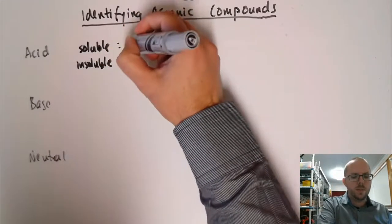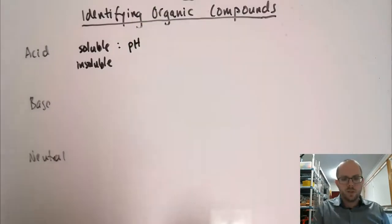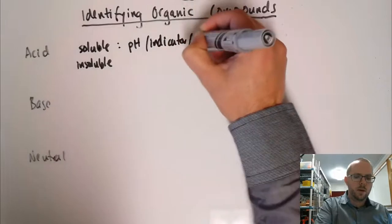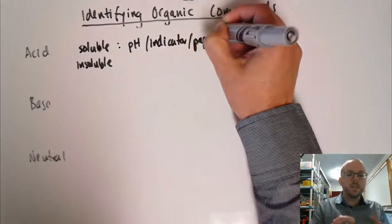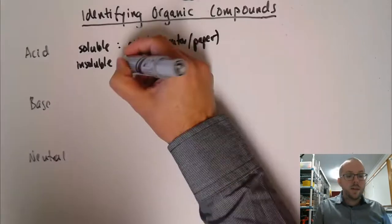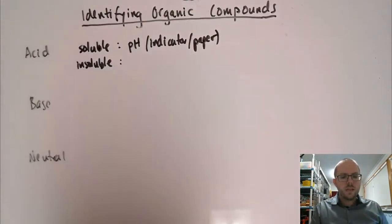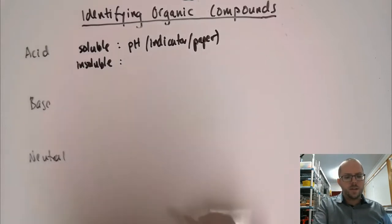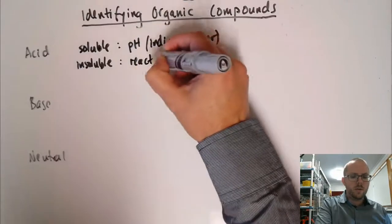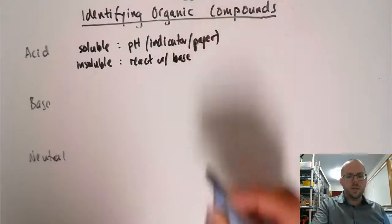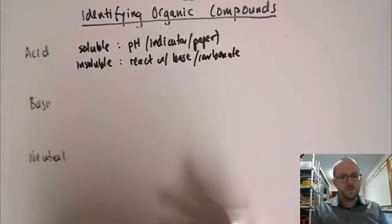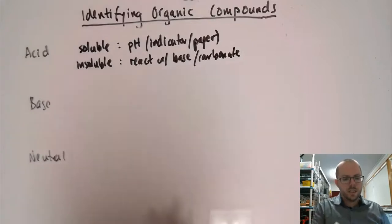For acids, if it's soluble, we can check the pH using indicator or paper, like a litmus paper or some other kind of test that we can do to check if it's acidic. But if it's insoluble, we can't test the solution. If it's insoluble, will it react with a base or a carbonate to form bubbles? Will it undergo that reaction?